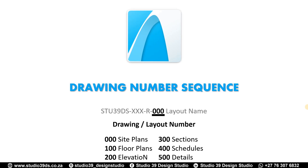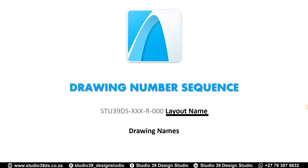Then we have the drawing or layout number indicated as triple zero. Triple zero represents site plans; 100 to 199 represents floor plans; 200 to 299 represents elevations; 300 for sections; 400 for schedules; 500 for details, and so on depending on what you want to show. Lastly, we have the layout name or drawing name — this can indicate site plan, floor plan, elevation, section and so on. Now that we've covered the drawing number sequence, let's head over to ArchiCAD.